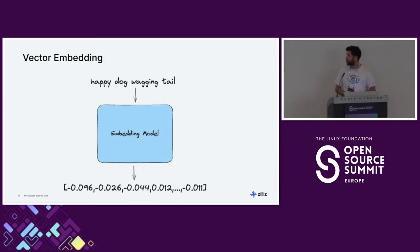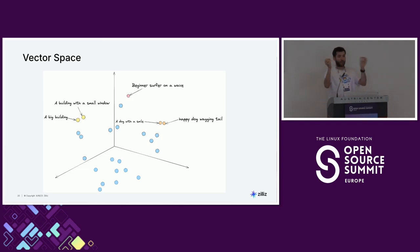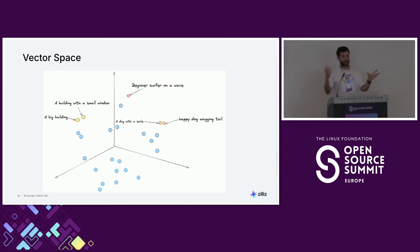Here's a simple use case. You have your text, you put it through an embedding model, and you get a list of vectors — usually a list of floats. Everything is projected into vector space. Things that are very similar in meaning will be very close to each other. A 'dog with a smile' will be very close to 'a happy dog wagging its tail,' but quite far from an image of a surfer or buildings.